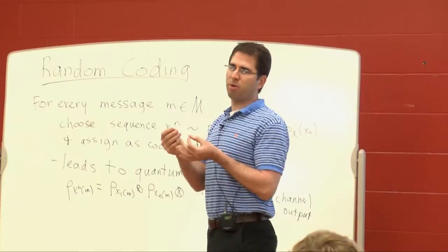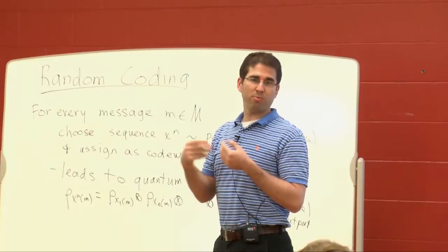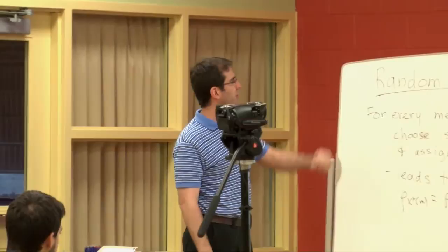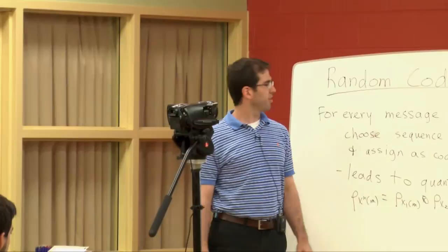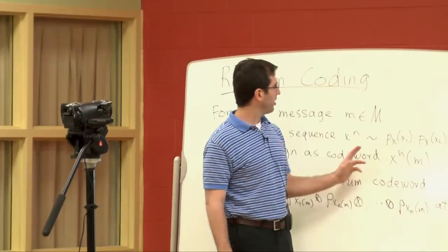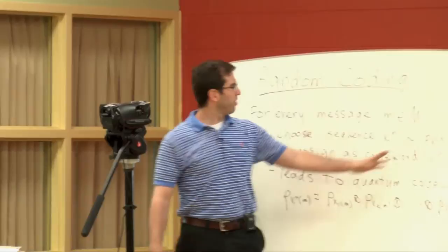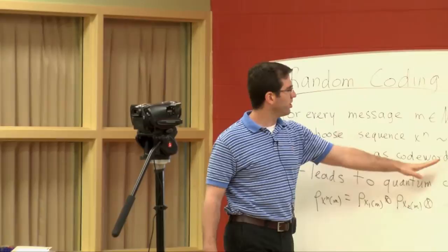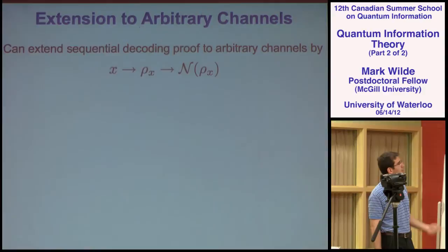The idea with random coding was that beforehand Alice and Bob are allowed to meet and agree upon some code, and we allow them to choose a code randomly. This worked well in the large limit of large block length. The way random coding worked is: for every message M in the message set, they'll choose some sequence X^N randomly, where N is the number of channel uses, chosen according to a product distribution—independently for every symbol and for every message. This was helpful in the error analysis.